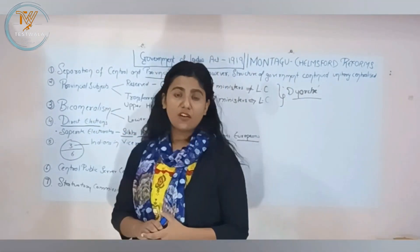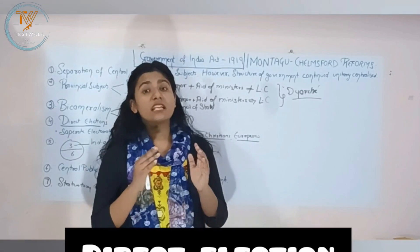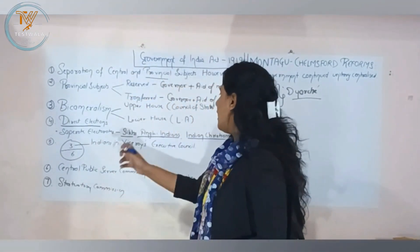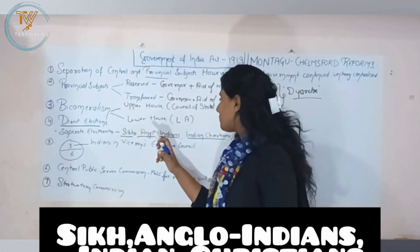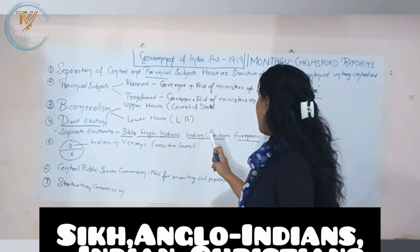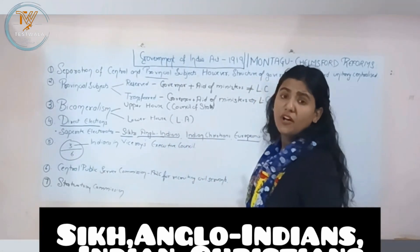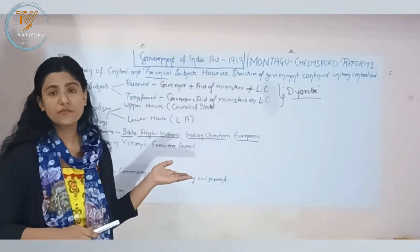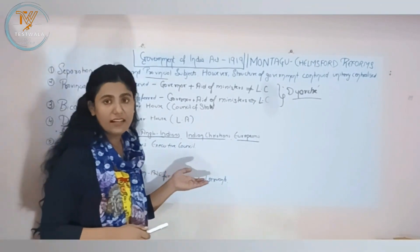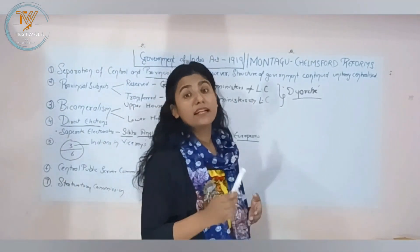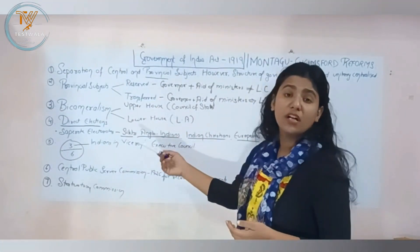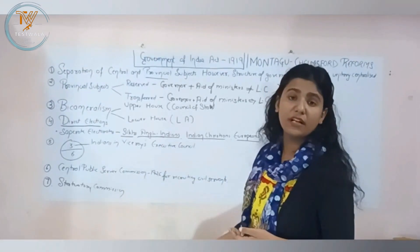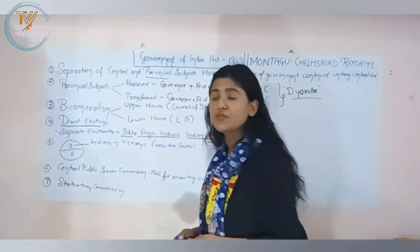There was also a concept of separate electorates provided for different communities — Sikhs, Anglo-Indians, Indian Christians, and Europeans — as provided under the 1909 Act and carried forward, now divided into Sikhs, Anglo-Indians, Indian Christians, and Europeans.